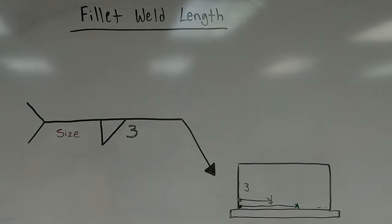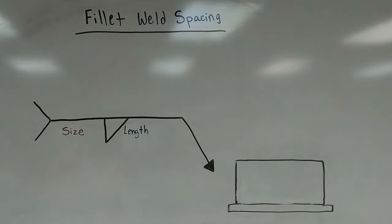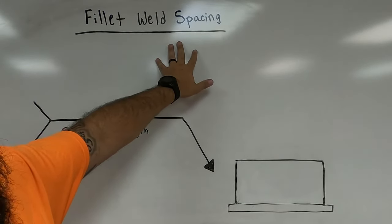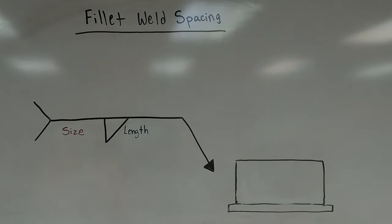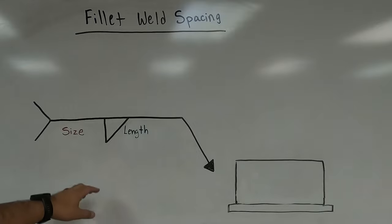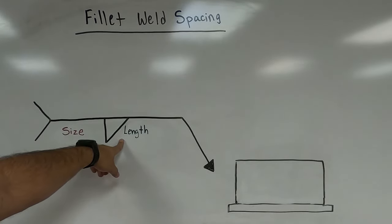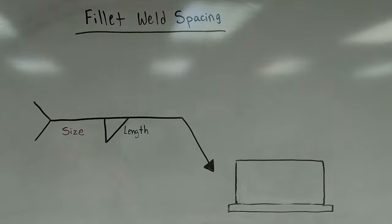Now that we've covered size and length — what if fillet welds need to be spaced apart at certain intervals? This falls under what's sometimes called stitch welds, but the more appropriate term is intermittent welds — sections of small welds following in line with each other. The spacing between them is called pitch. Size is to the left of the fillet weld symbol, length is to the right, and pitch accompanies length on the right-hand side.